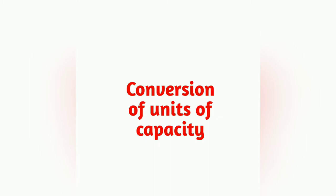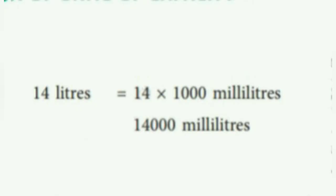Just observe these examples. Here we have to express 14 liters into milliliters. As you know, 1 liter equals 1000 milliliters, 2 liters equals 2000 milliliters. Same way, 14 liters equals 14,000 milliliters—14 multiply 1000. So to convert liters into milliliters, we will multiply the number by 1000. The answer is 14,000 milliliters.